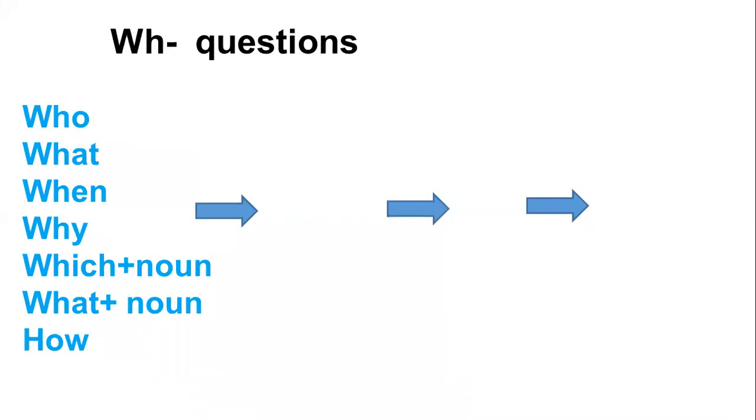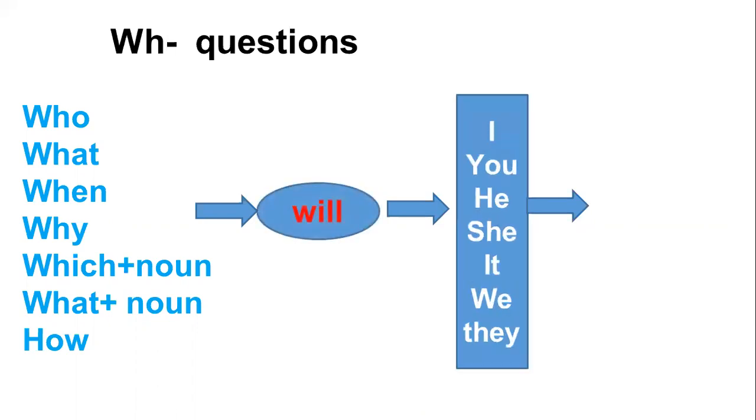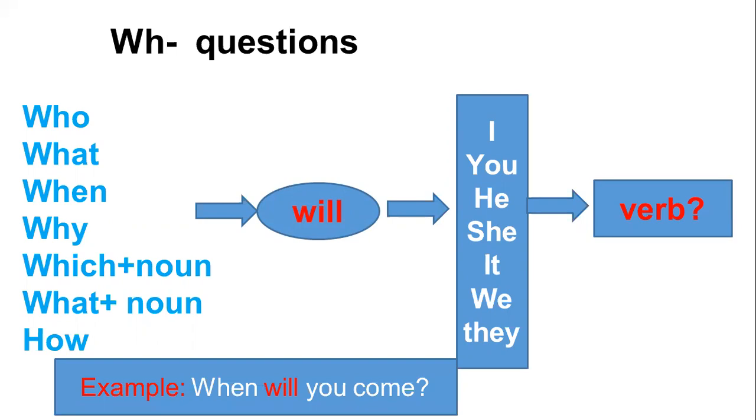In order to make WH questions, we use question words, and they usually come at the beginning of the sentence. They are followed by will, then we have our subject, and of course, the main verb. For example, when will you come home?